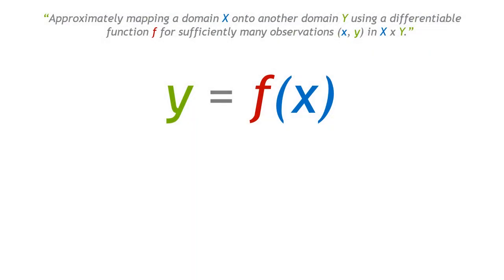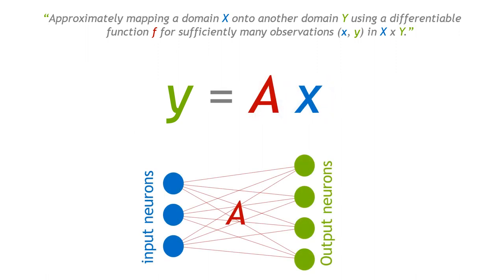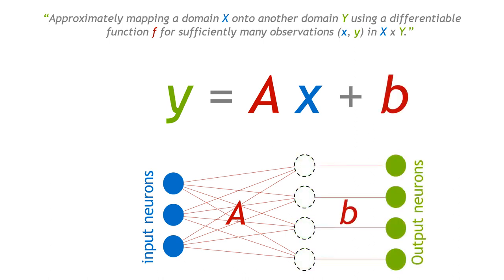We start again with the functional mapping, y equals f. In the previous session, you have already seen how to establish a linear map by multiplying a vector x with the matrix A. Here we want to call all the entries in the vector x input neurons, and all the numbers in the output vector y output neurons. In our case here, we chose the dimensions 3 and 4. The matrix A establishes an all-to-all correspondence between the input neurons and the output neurons. Of course, you are always free to add a bias vector b of the same dimension as the output vector y.